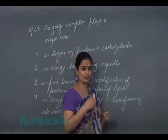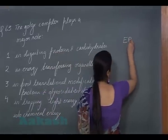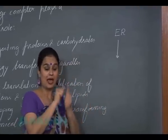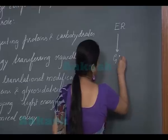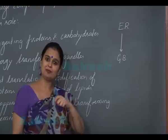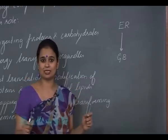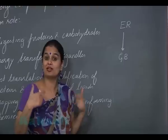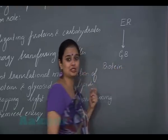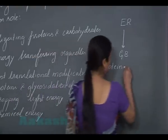The functioning of organelles like the endoplasmic reticulum and Golgi bodies is interrelated. The endoplasmic reticulum forms certain chemicals, which are packed into vesicles and transported to the Golgi bodies. The materials synthesized in the endoplasmic reticulum are carried via vesicles to the Golgi bodies, where they undergo modification. For proteins, a sugar chain — a carbohydrate — is added.